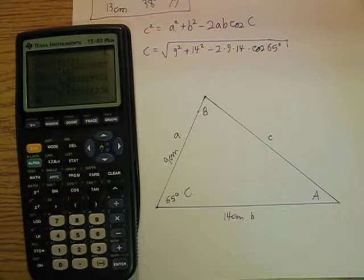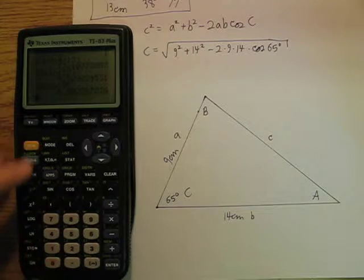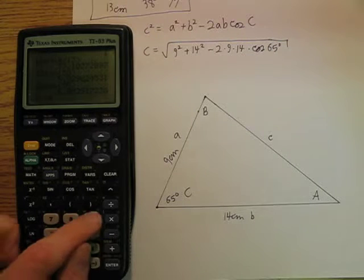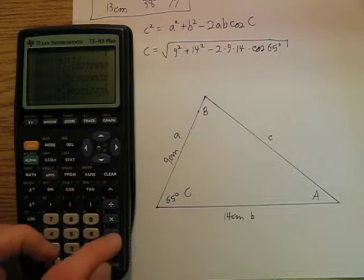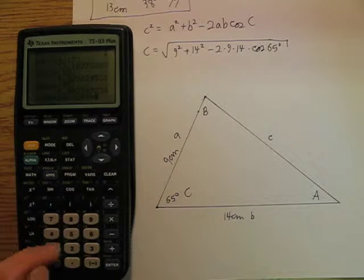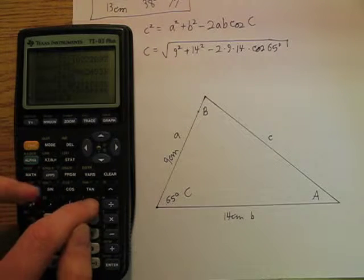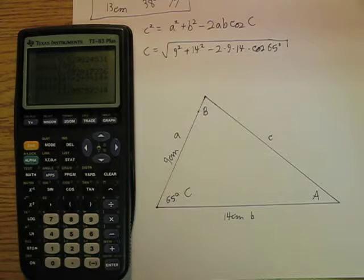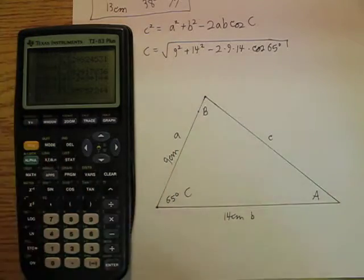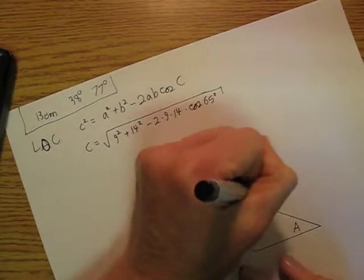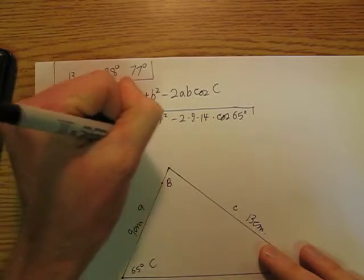That's why we have powerful calculators to help us with this. I am going to go square root of 9 squared plus 14 squared minus 2 times 9 times 14 times cosine 65, close parenthesis, close parenthesis, boom, 13.06, which is basically 13, which is what we measure. So this is 13 centimeters. C is 13 centimeters.